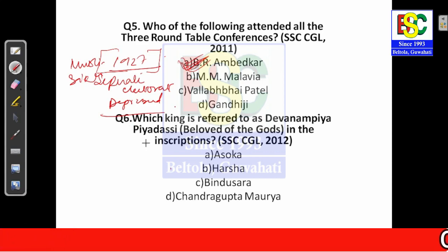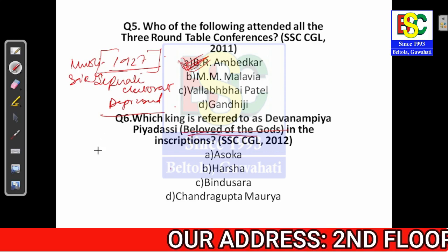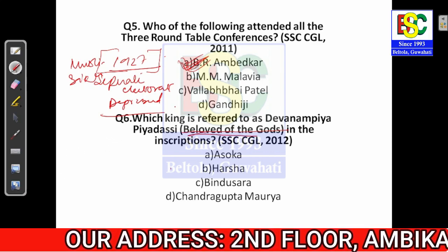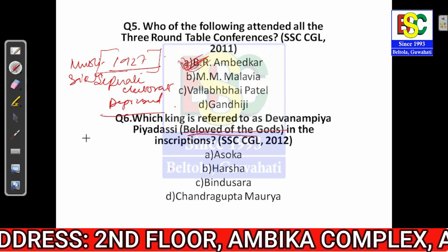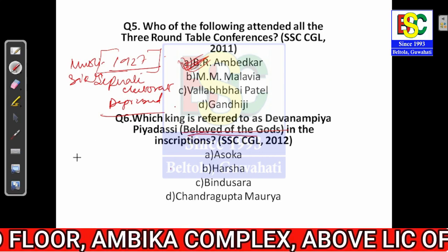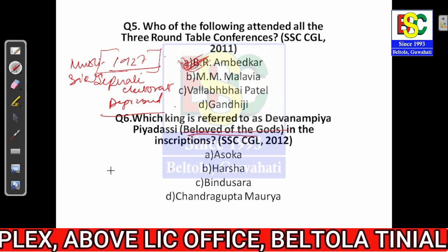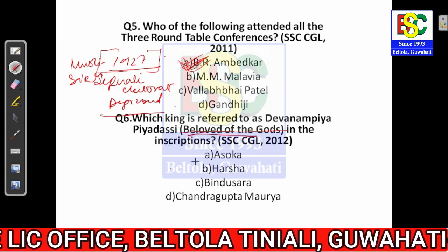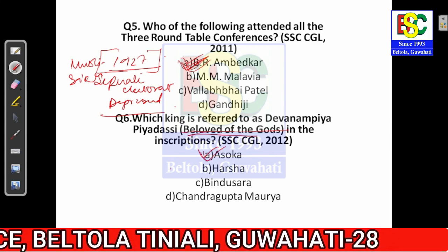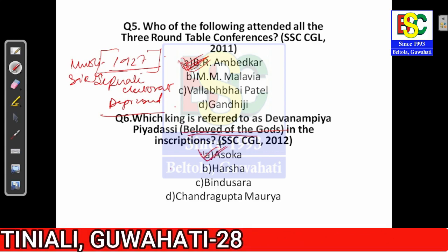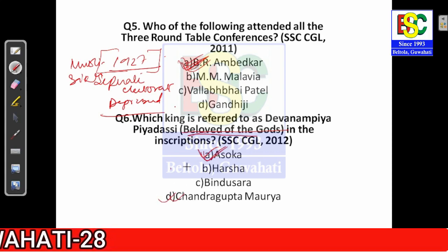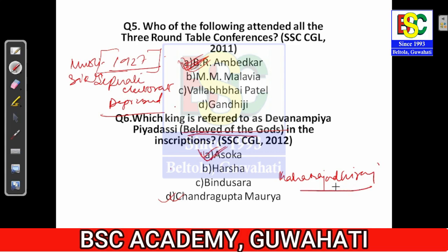Question number six: which king is referred to as Devanampiya Piyadasi in inscriptions? Devanampiya Piyadasi means 'beloved of gods.' In ancient history, kings of the Gupta and Maurya ages used to give themselves titles according to their rule. The title Devanampiya Piyadasi was taken by Ashoka. Similarly, Chandragupta Maurya took the title Maharajadhiraj. Such titles were commonly adopted by kings of ancient India.